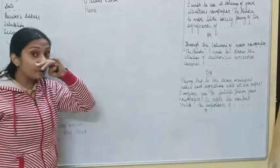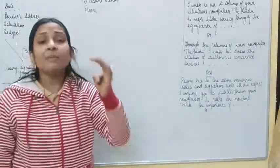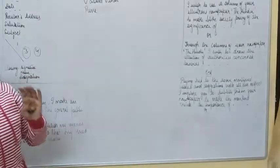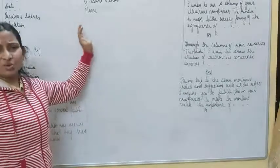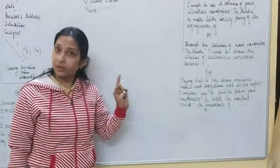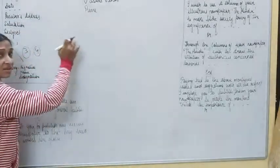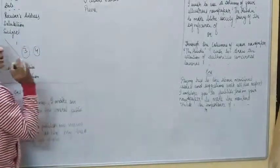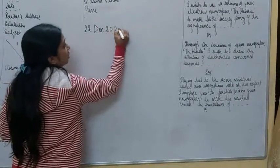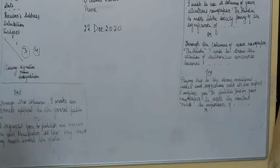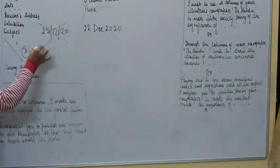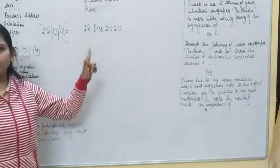This is just an example — write the address given in the question. There is very little chance the sender's address won't be given, but if it isn't, write an imaginary address — do not use your own. Then the date comes after leaving a line. Date has a fixed format: the month will always come in words. Do not write it numerically — that is the wrong and inappropriate way of writing a date.